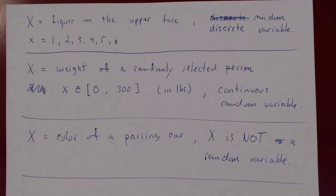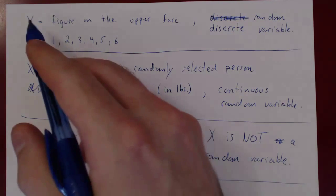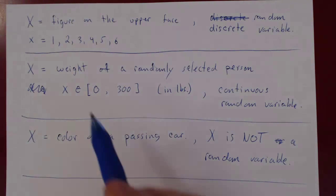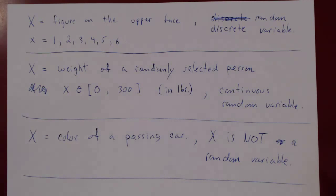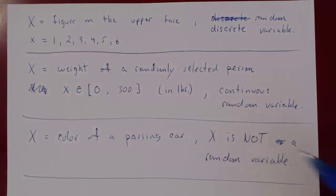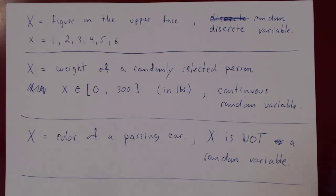Now the question is: what qualities are we interested in when we have a random variable? With the die example — you roll a six-faced die and observe the upper face — as you roll over and over again you'll see different values. What's the average value of the random variable? What value do you expect to see most often? And how much variability is there in the random variable?